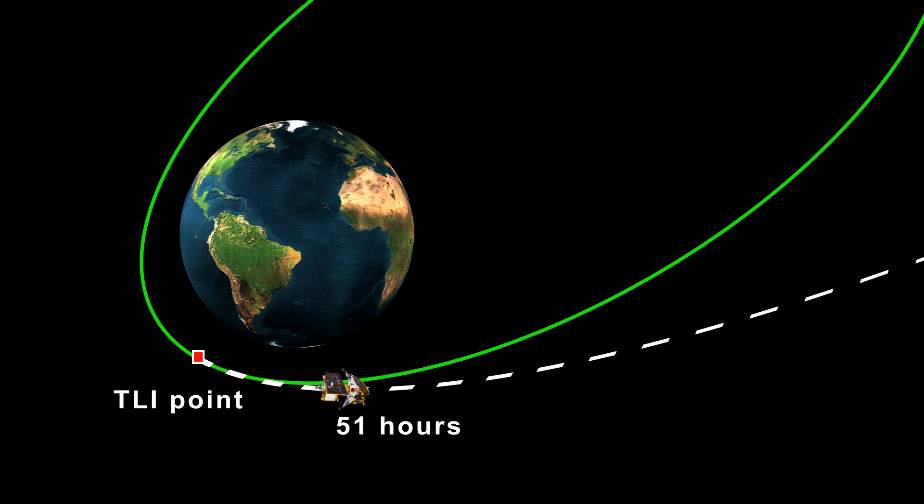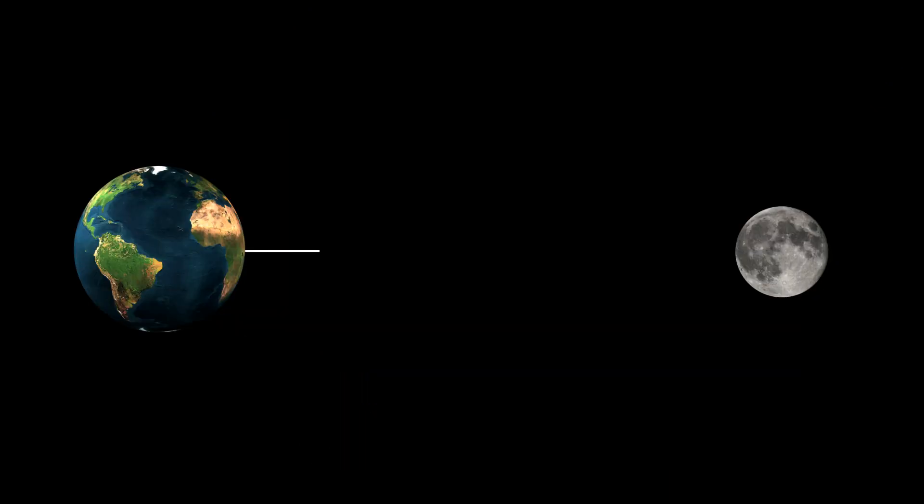On average, the spacecraft will take about 51 hours to travel 1,20,000 km, while the average distance between Earth and Moon is 3.8 lakh km. The actual distance may vary from 3.6 to 4 lakh km based on the position of Earth and Moon.